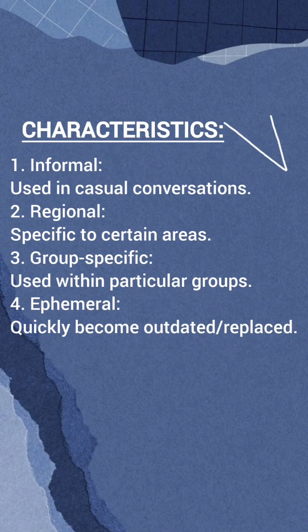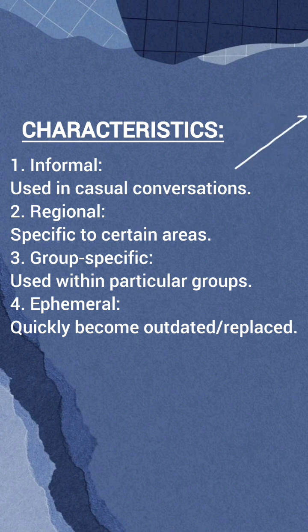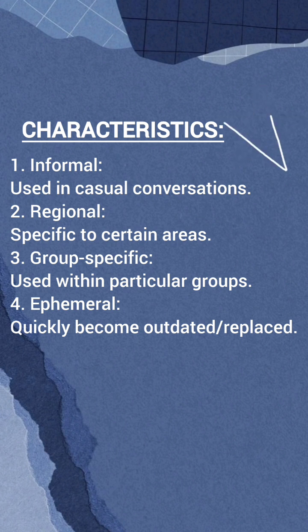After this, we have the characteristics of slangs. One is informal. The other one is area-specific. The third one is talking about a specific group. And the fourth one is that it has changed over time — for example, the word 'groovy' now means to freak out.